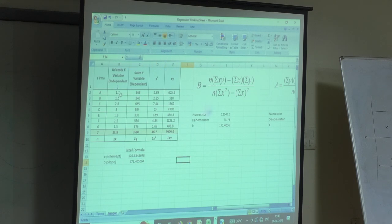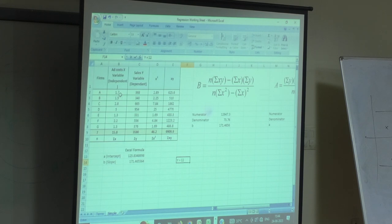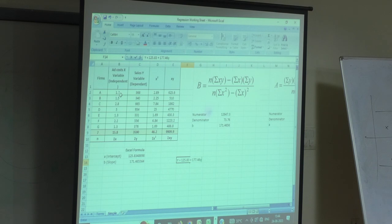So, based on this, I am getting my equation as y equals 125.83 plus 171.46x. This is my equation. Based on this, I will plot them. Scatter plot, let's plot that also.